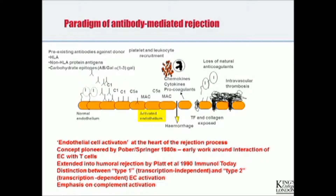Once the antibody is bound, complement is fixed. At the heart of this rejection process is what's called endothelial cell activation. This is a relatively modern concept, pioneered by Tim Springer and Jordan Pober in the 1980s — initially around the way T-cells interact with endothelium — but it was adapted into humoral rejection by Jeff Platten and Fritz Bach about 20 years ago.